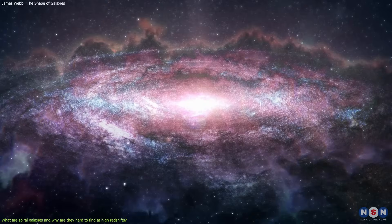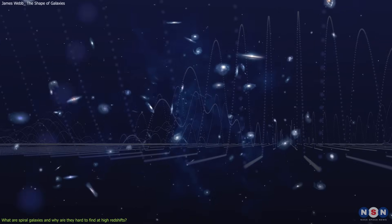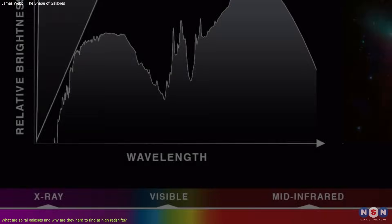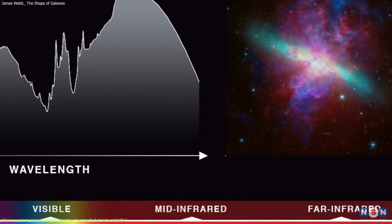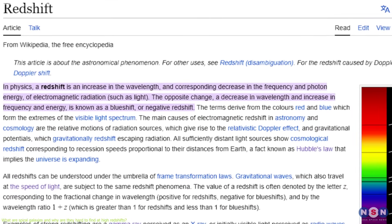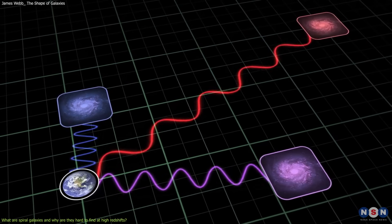The light that we see from a galaxy depends on two factors: the distance and the wavelength. The distance is how far away the galaxy is from us, and the wavelength is the type of light that the galaxy emits or reflects. The distance and the wavelength are related by a phenomenon called redshift, which is the stretching of the light waves due to the expansion of the universe.